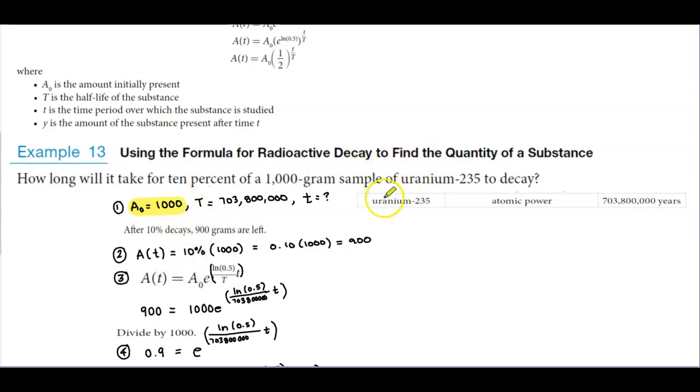And so then we're looking at uranium-235. So we need to look at that table. And the half-life of that substance is 703,800,000 years. So we know that represents the value of capital T.